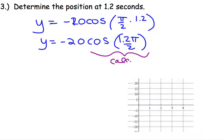Make sure your calculator is in radian mode. So we say the cosine of 1.2 pi divided by 2, you get an answer of negative 0.309. You multiply that by negative 20, and our y value is at 6.18 centimeters.